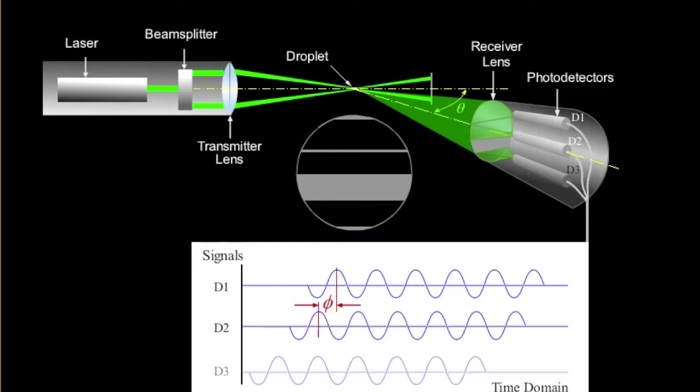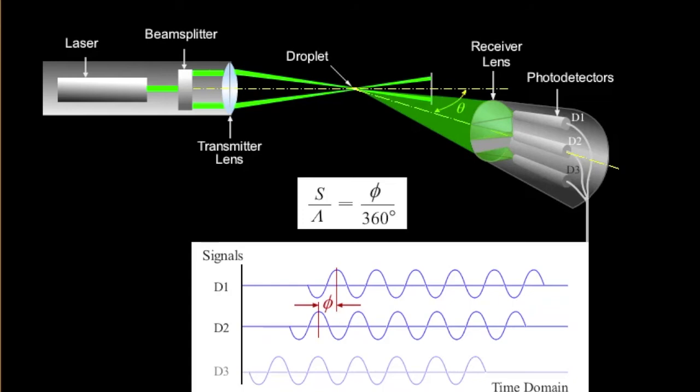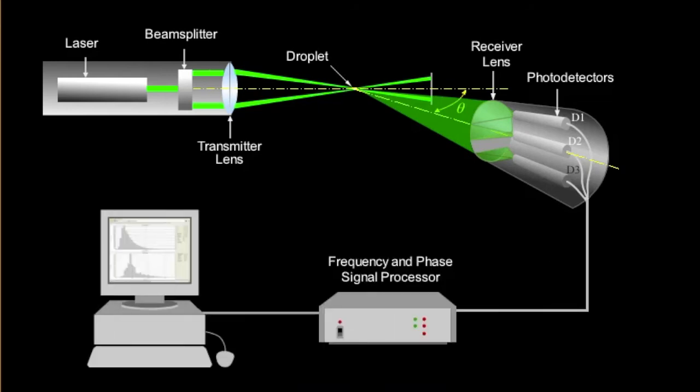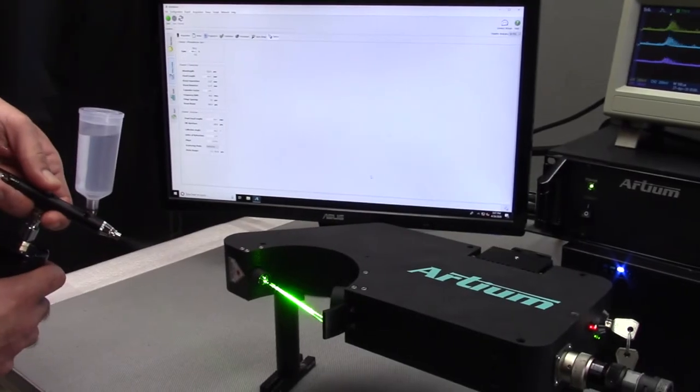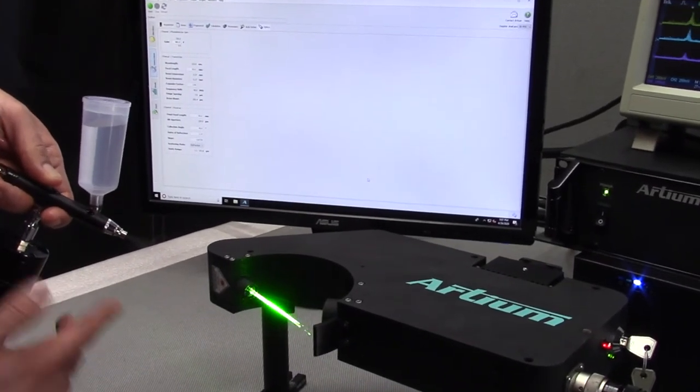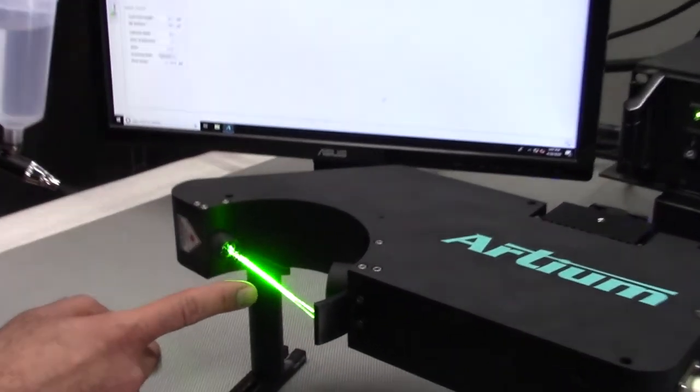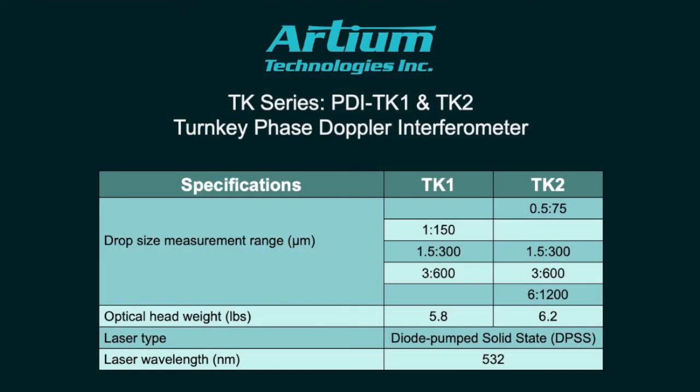Then we send those signals into the processor. And after some processing of the signals, we send those into the computer. And the software does the final calculation of the droplet diameter. The TK is one of many instruments Artium makes that uses PDI method. The TK itself comes in six or seven different packages and optical layouts to fit different applications. But we can also customize them to treat your application.